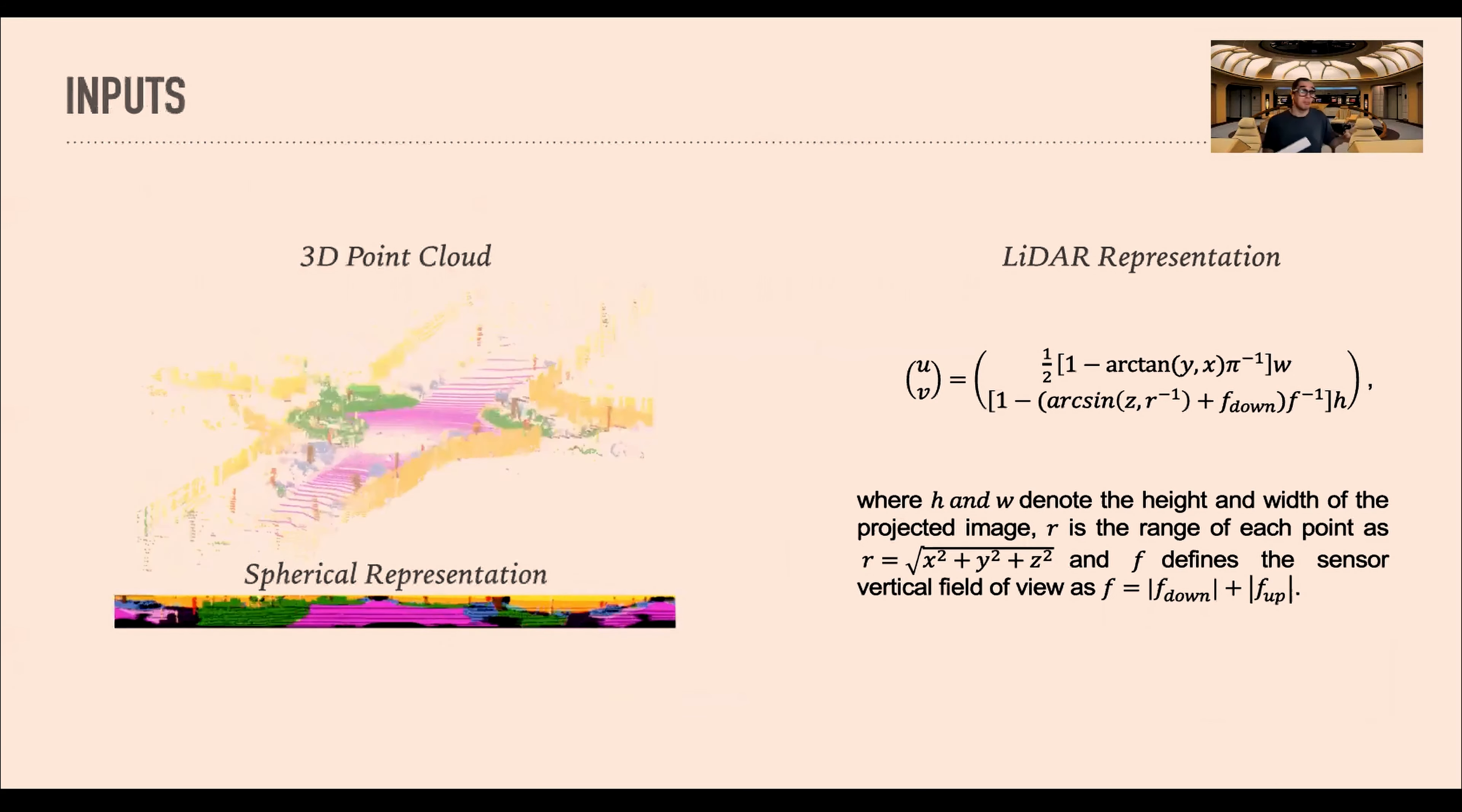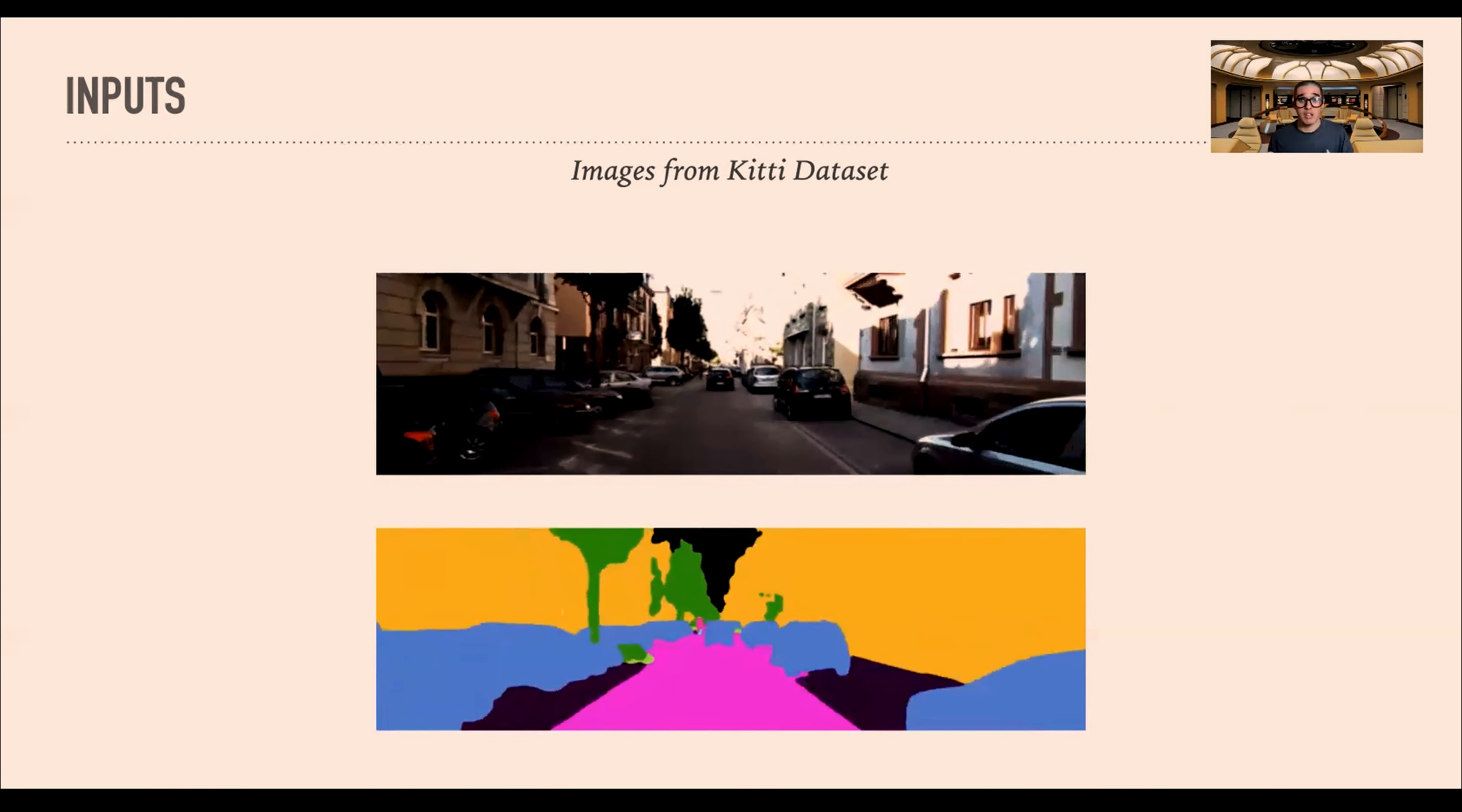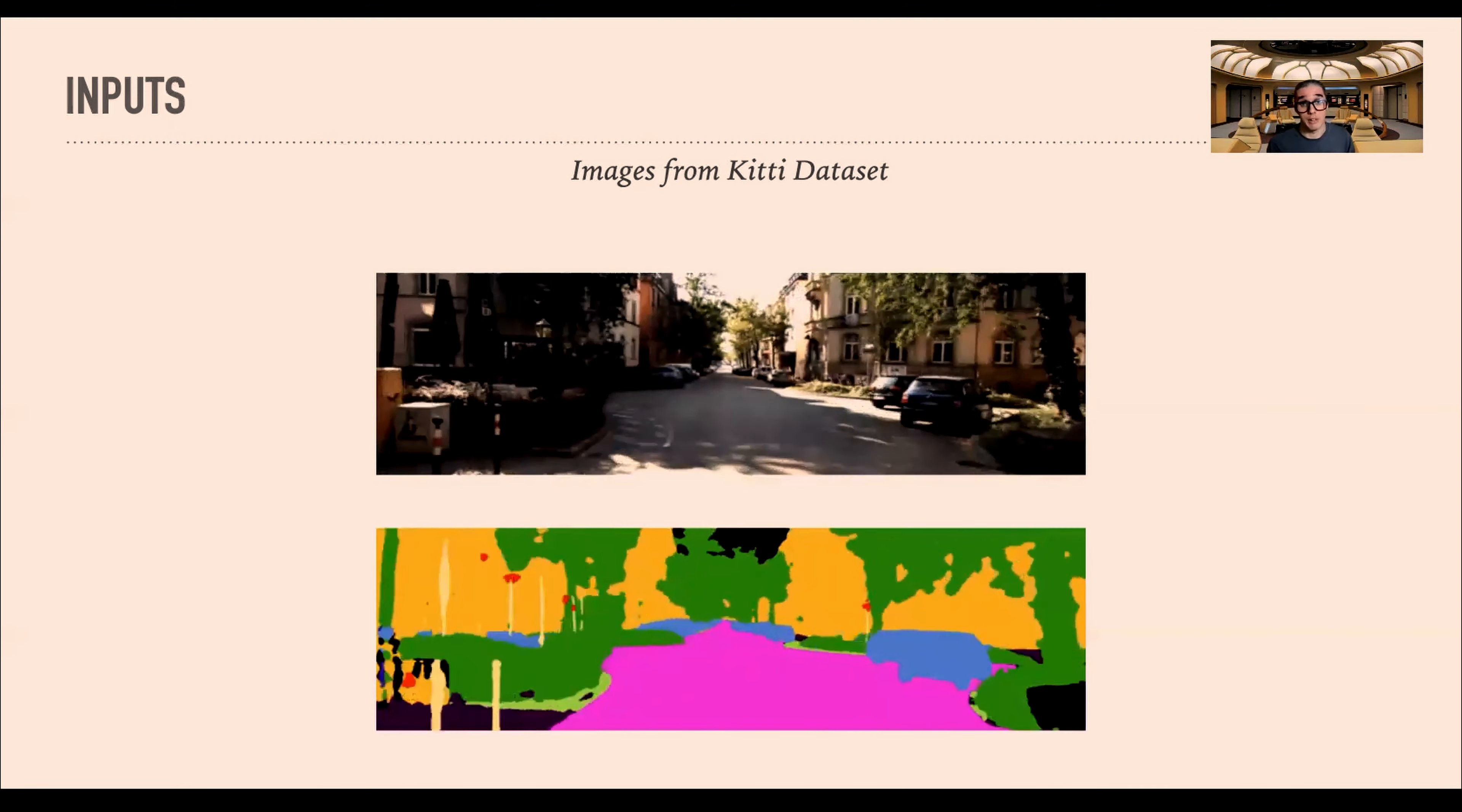The inputs from the LIDAR will be a 3D point cloud that will transform to a spherical projection. For the RGB, it will be the corresponding RGB images for each scan of the LIDAR. As some of you might notice, the semantic segmentation are not very perfect. That is because we are using a third network to do the semantic segmentation, as SemanticKITTI doesn't have ground truth for RGB.